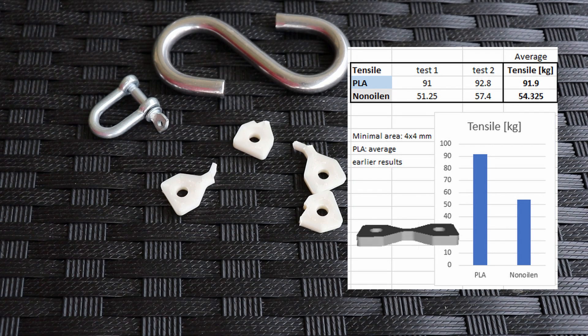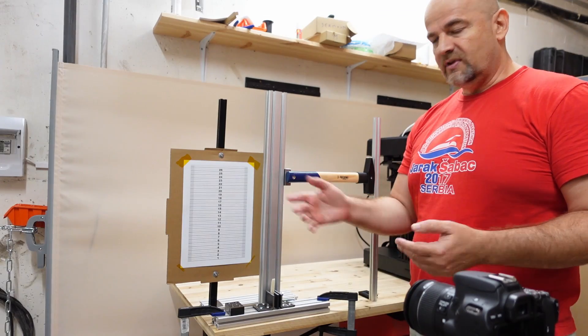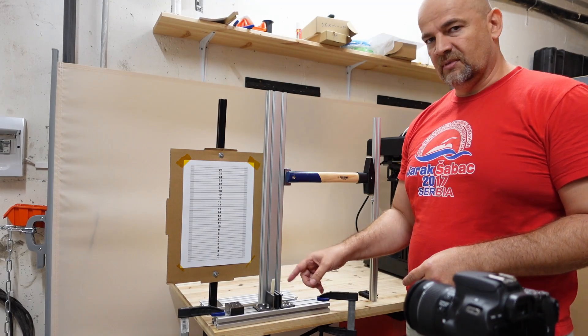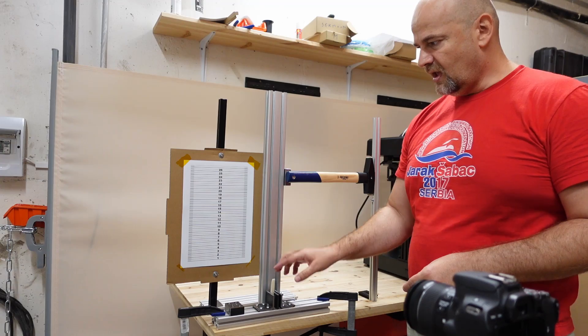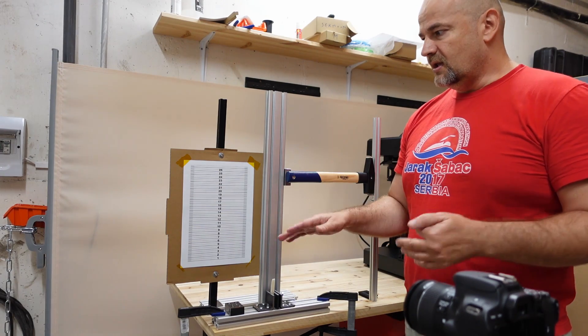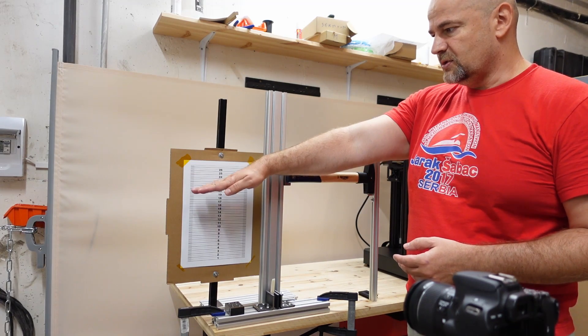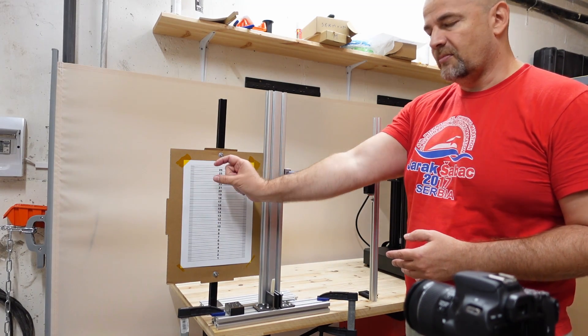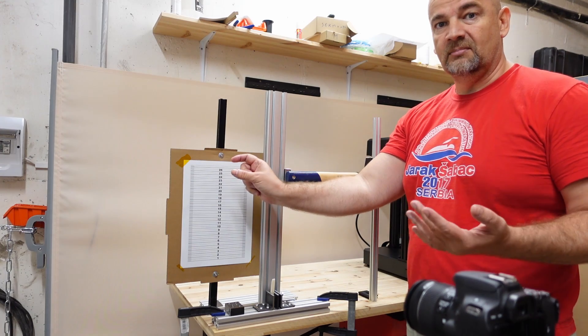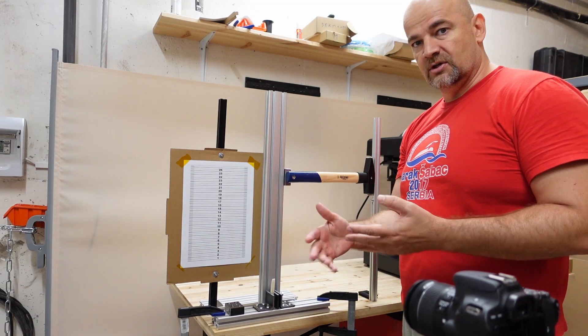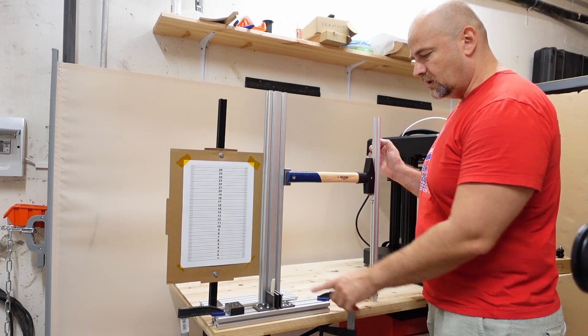With this impact test I want to see how brittle is this material. So there is my test specimen, and if it is brittle similar like PLA, in that case the difference between the zero position and the edge position by breaking the test specimen will be approximately 15 to 20 millimeters, but of course I will do the calculation later.